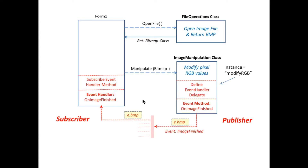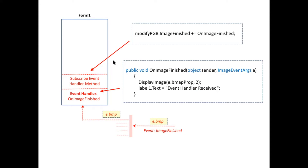Let's look at each of the functions that need to be performed in the two classes. Starting with the main Windows application form, there are two main functions. One is our event handler — when an event happens it's going to fire off this event handler. In this case it will be notified that the image has been modified, grab the modified image, and display it in the Windows form.